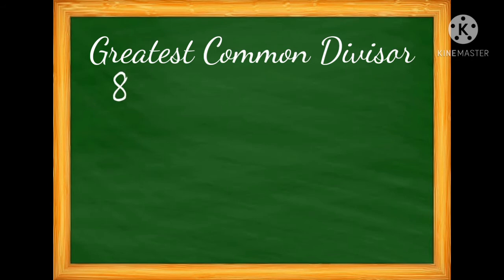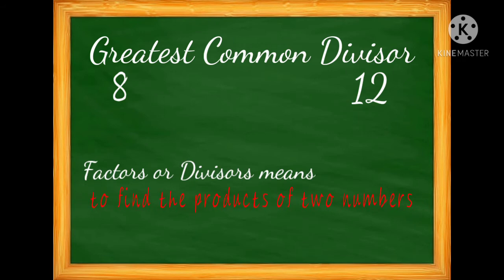To know how the GCD or GCF is computed, we must first understand the meaning of these words: greatest, common, and divisor. So let's first find the factors or divisors of each number. Factors or divisors means to find the products of two numbers. Look at 8 first.